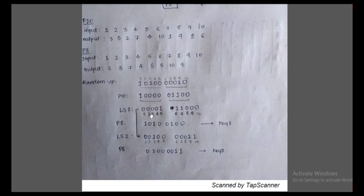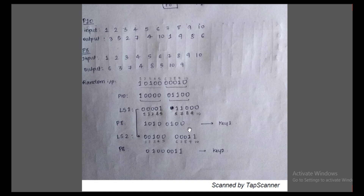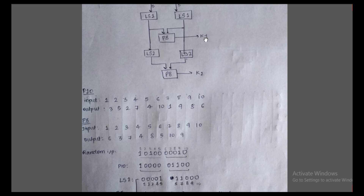Now we generate Key 1 from LS1 using P8. We number the LS1 bits one through ten. For P8, the sixth bit goes to position one, then the third bit giving zero, then the seventh bit giving one, then the fourth bit giving zero, then the eighth bit giving zero, then the fifth bit giving one, then the tenth and ninth bits giving zero, zero, zero. This gives us Key 1.